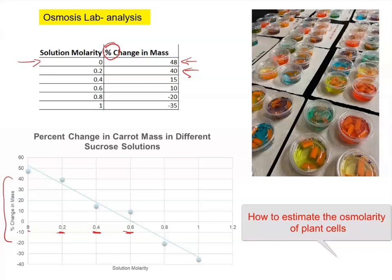So we have 0 and 48. So here's your 0 molarity, 48% change, 0.2 molarity, 40% change. So you're going to put all your data points, and then generate a line of best fit.